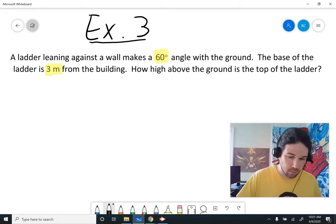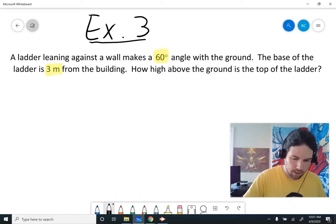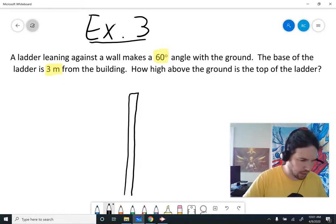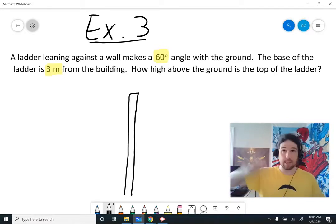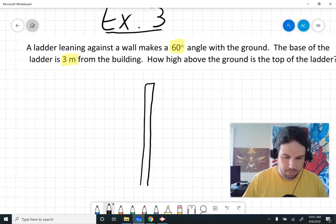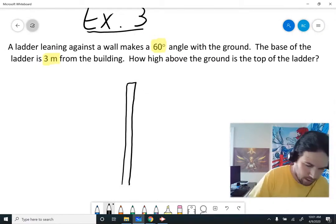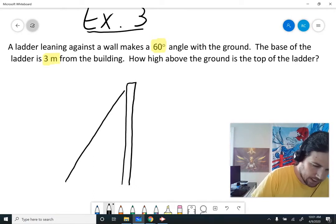Okay, so we've got a wall. I'm actually going to draw a wall even though you don't really have to. You can just make it an up and down line. That's totally fine. So we have a ladder leaning against that wall.